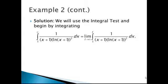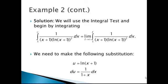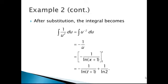Since this is an improper integral, we rewrite it as the limit as t approaches infinity of the integral from 1 to t of 1 over x plus 1 times the natural log of x plus 1 squared. We make a u substitution, letting u equal the natural log of x plus 1, so that du equals 1 over 1 plus x dx. After substituting, the integral becomes 1 over u squared with respect to u, which we rewrite as the antiderivative of u to the negative 2. Using the power rule, we get negative 1 over u.